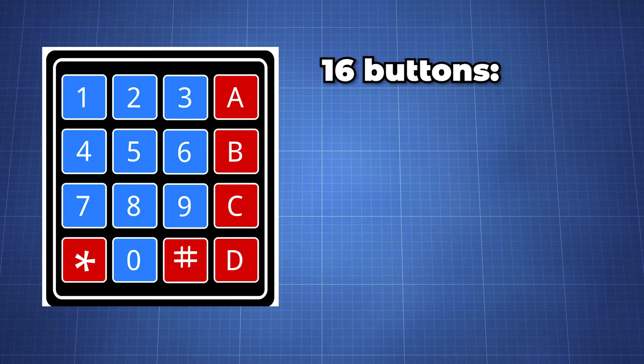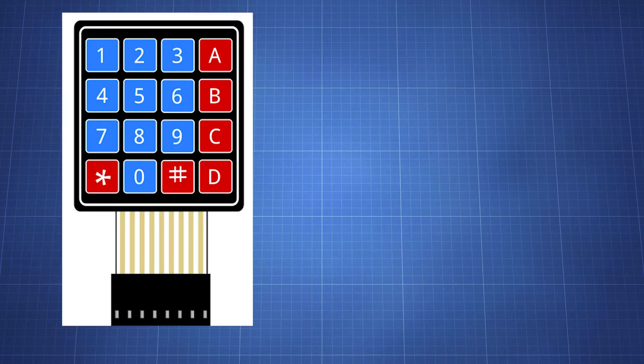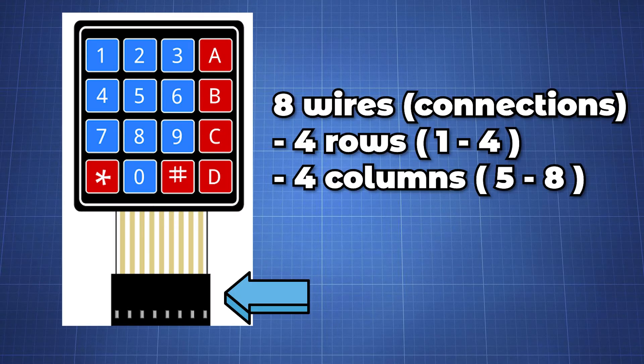This keypad has 16 buttons, 10 numbers from 0 to 9, letters from A to D and the star and hash symbol. This keypad has a ribbon wire with a total of 8 wires which 4 of them are for rows and the other 4 are for the columns.